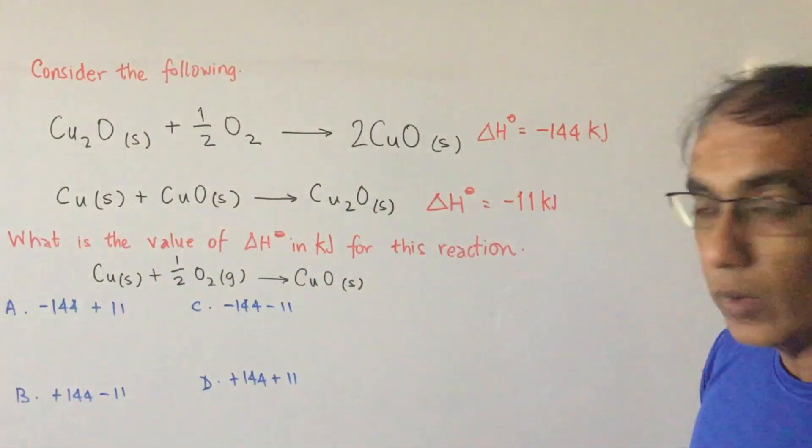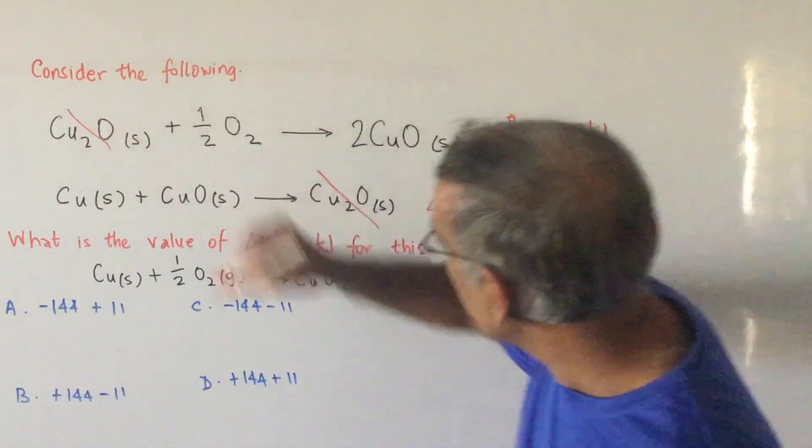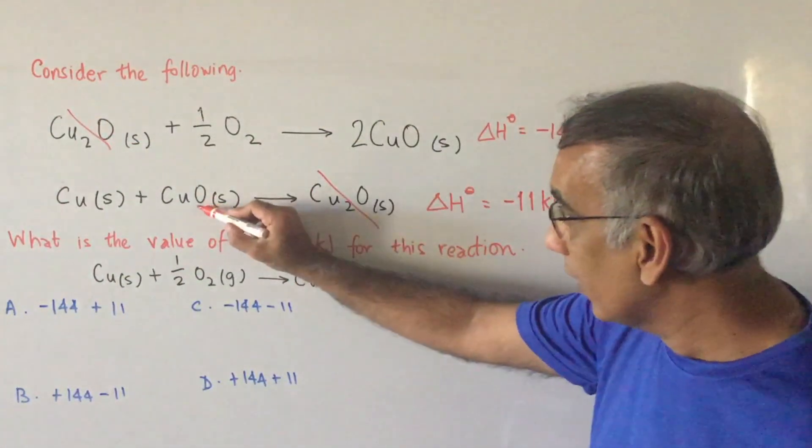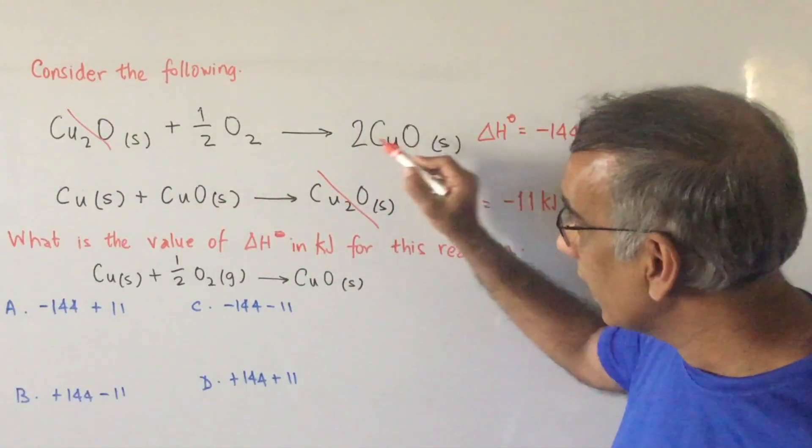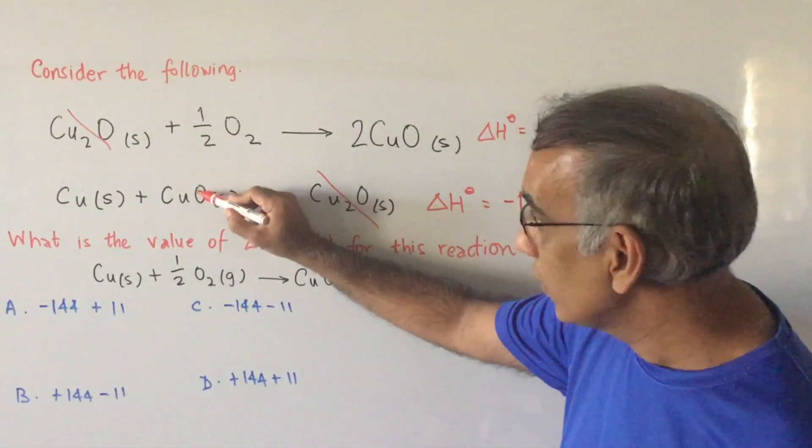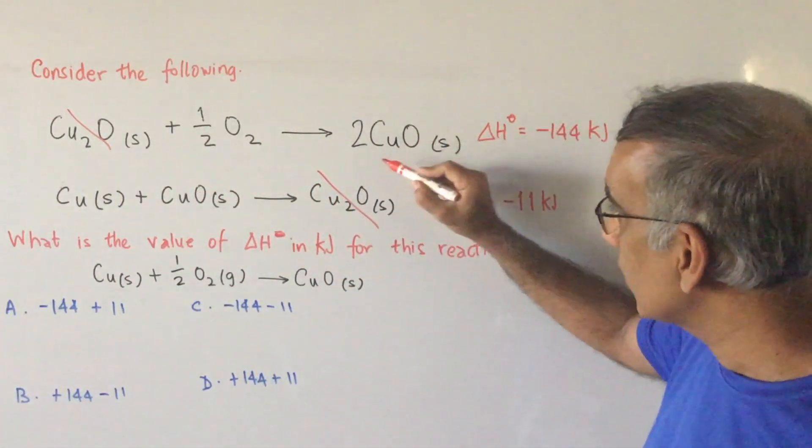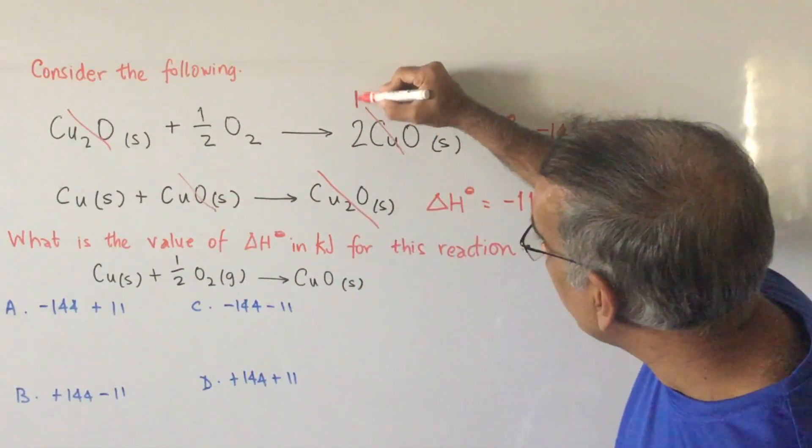So we don't need the Cu2O, so we can cancel this, cancel this. Then conveniently, we've got one CuO here and two here. So this two can cancel just one of these, leaving us with one CuO over on this side. So this cancels this but leaves one behind.